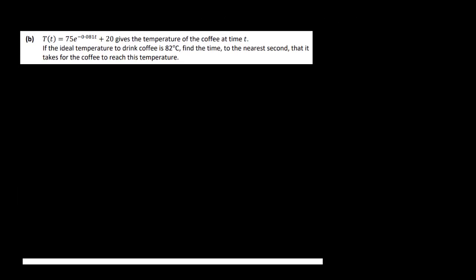Now let's look at part B. We are given T(t) = 75e to the power of minus 0.081t plus 20. If the ideal temperature to drink coffee is 82 degrees Celsius, find the time to the nearest second that it takes for the coffee to reach this temperature. This time we are given the temperature as 82, and we've got to work backwards to find what t is.